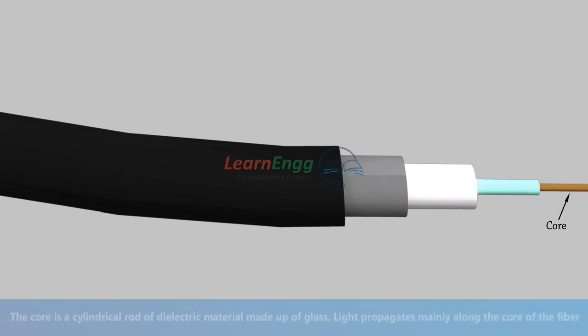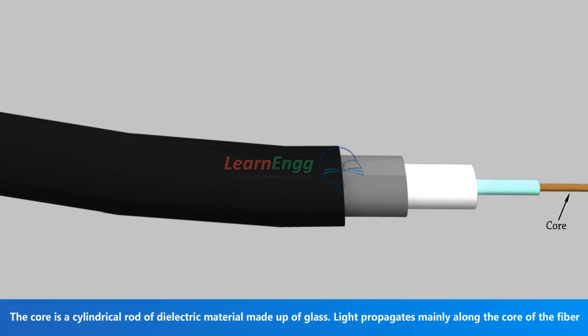Core: It is a cylindrical rod of dielectric material made up of glass. Light propagates mainly along the core of the fiber.